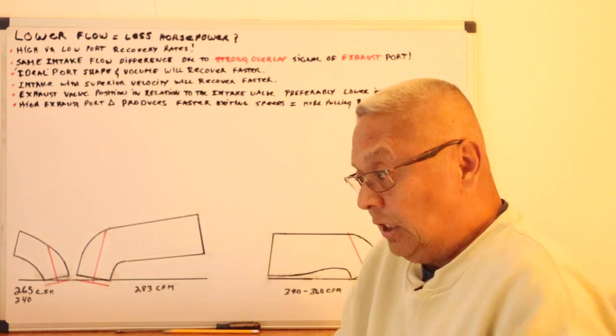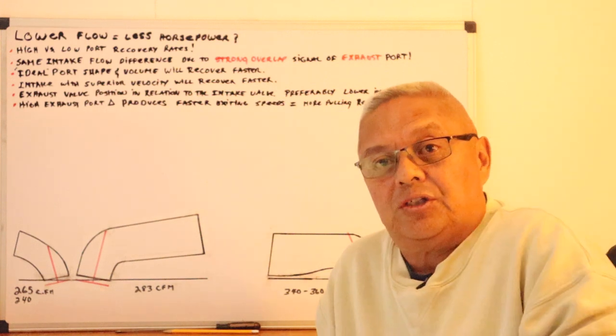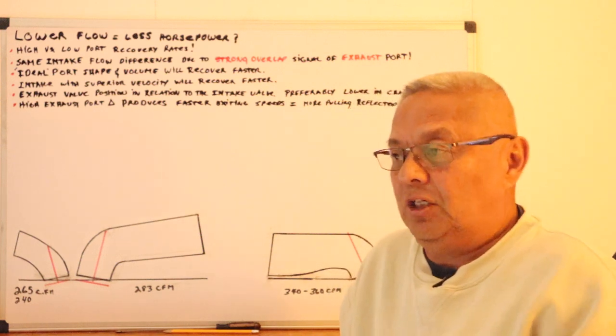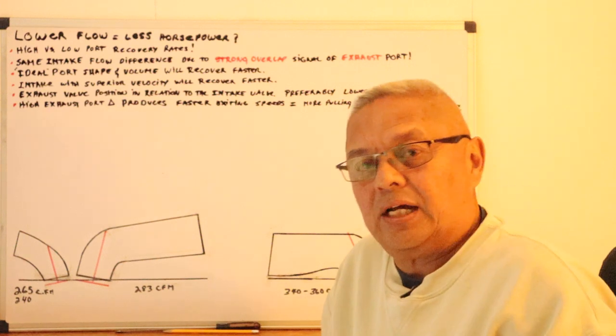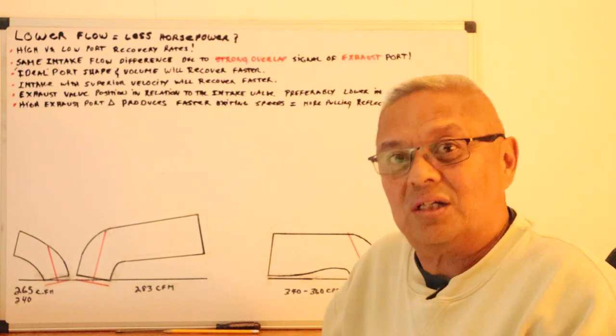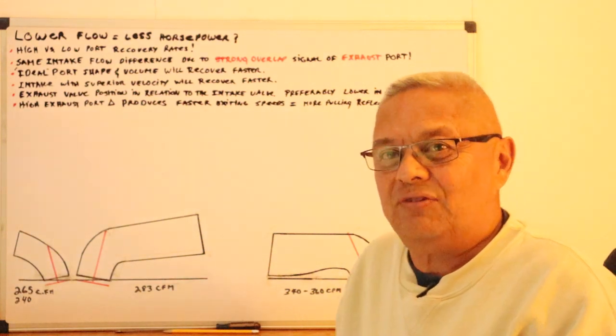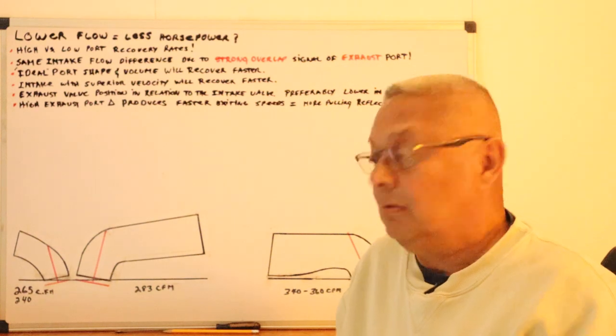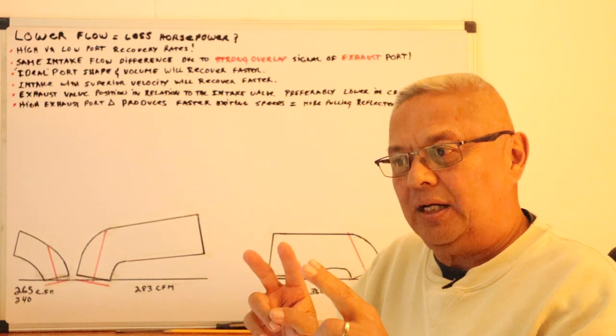What we're going to talk about today is how many times have you heard somebody say, I have this 340 CFM intake port and we drove the track and later on we switched to this other cylinder head that's only flowing 300 or 320, 20 or 40 CFM down. The doggone thing went faster or just as fast. What happened?